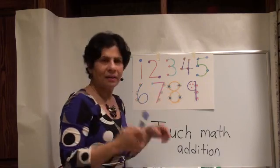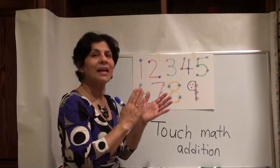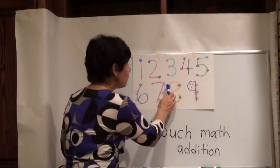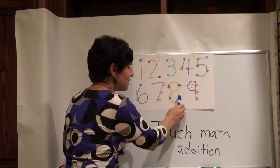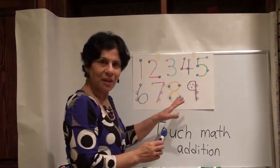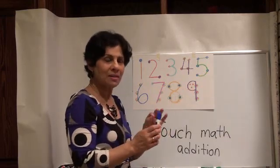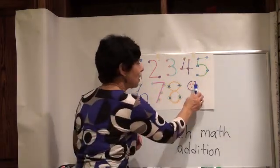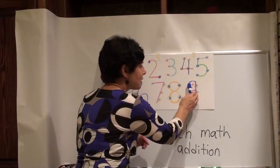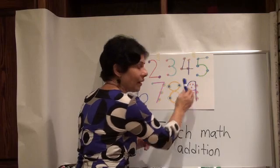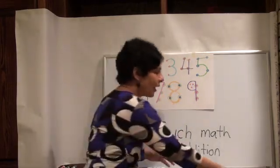Eight kind of looks like someone wearing earrings, right? Let's count again. Dots and circles. One, two, three, four, five, six, seven, eight. That's for the number eight. And nine has nine, a combination of dots and circles. Let's count. One, two, three, four, five, six, seven, eight, and nine.